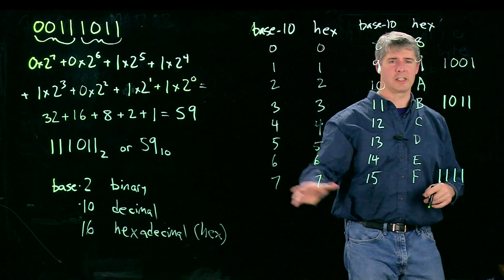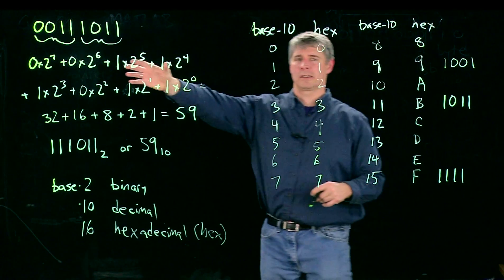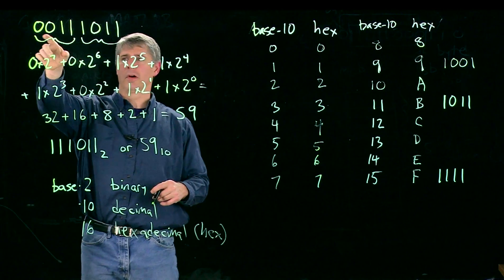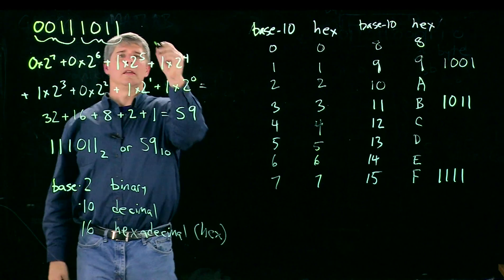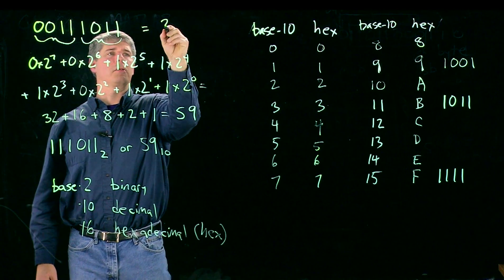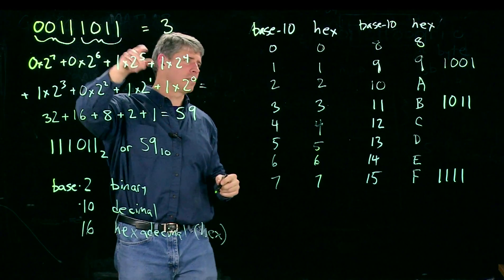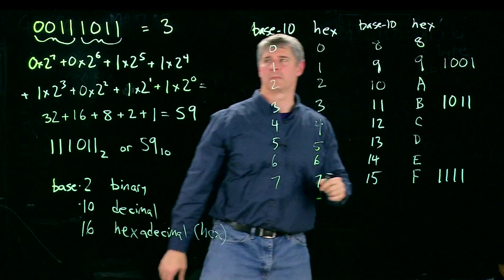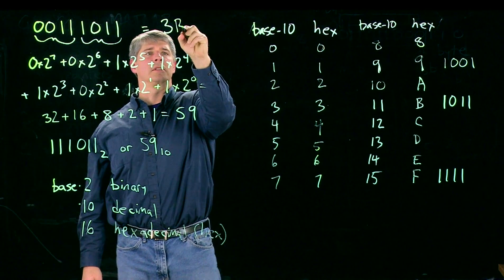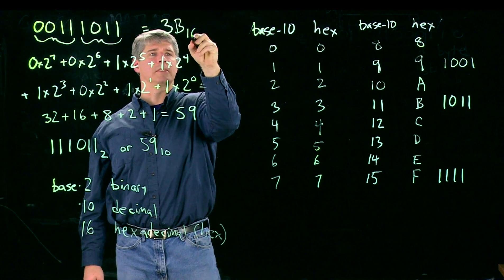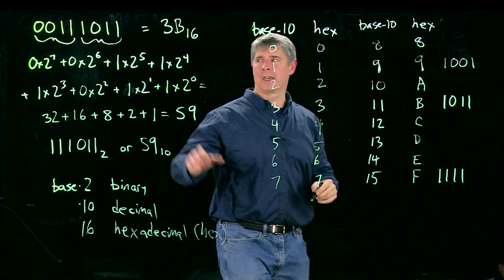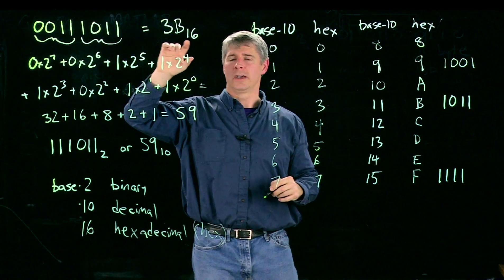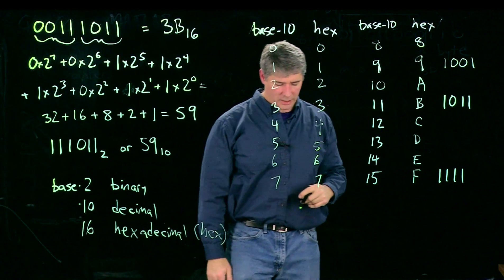So this is our hexadecimal table. And if we take this number that we had before, we can see 0011 is the same as 3 in hex, and 1011 over here is B. So this is 3B in base 16. So now we can take what took us 8 characters to write and write it in only 2 characters.